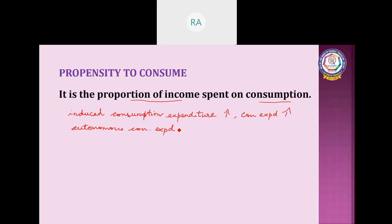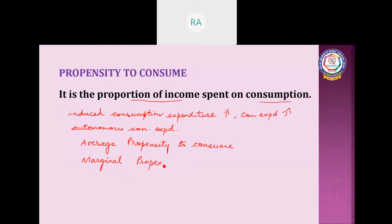Now there are two measures of consumption expenditure. One is average propensity to consume and the other one is marginal propensity to consume.